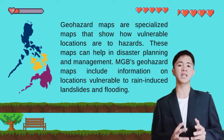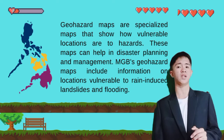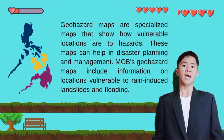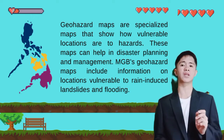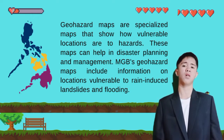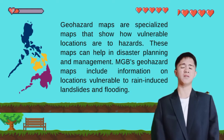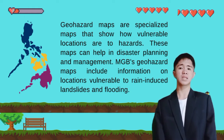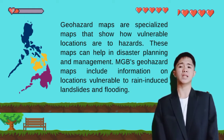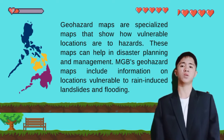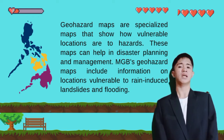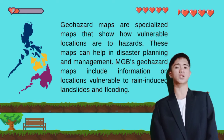Geo-hazard maps are specialized maps that show how vulnerable locations are to hazards. These maps can help in disaster planning and management. Geohazard maps include information on locations vulnerable to rain-induced landslides and flooding. They indicate the hazard susceptibility of areas and can help us be aware of the hazards in our area. These maps are intended for public awareness of hazards that might occur in the future or in our community.